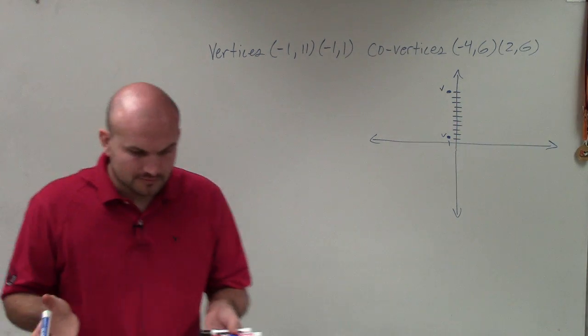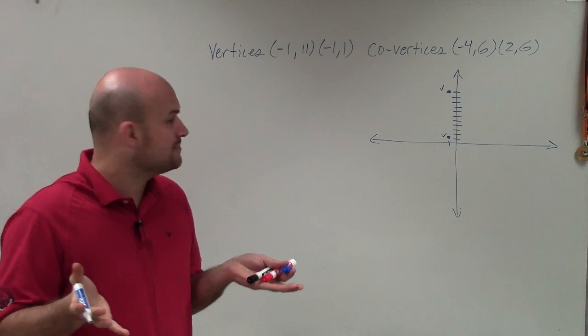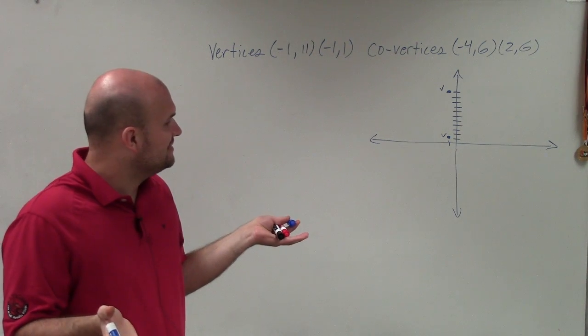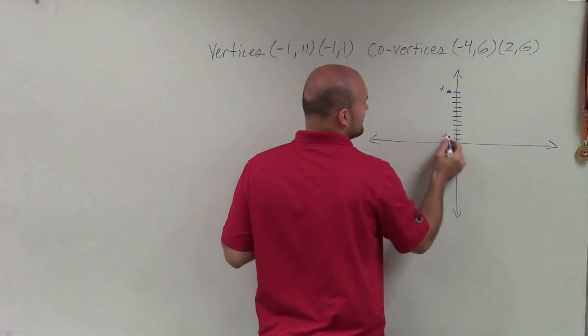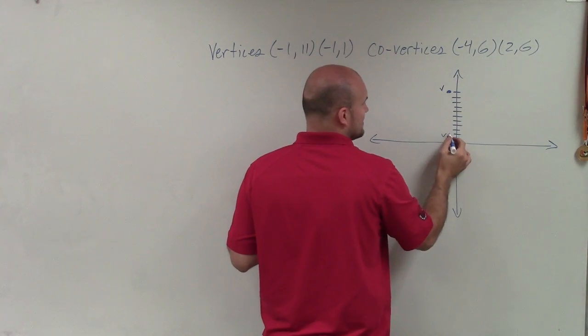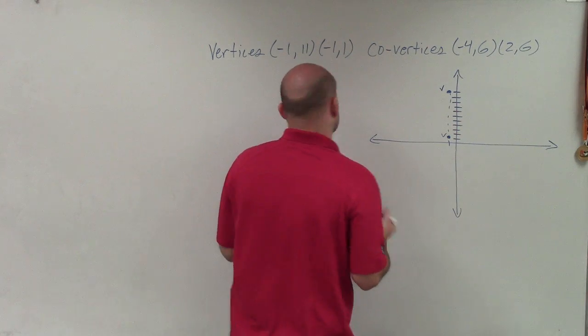Now without even finding my covertices, I can see that since my vertices have to lie on the major axis, my major axis is going to be vertical, right?